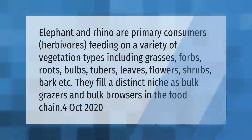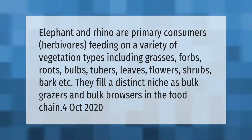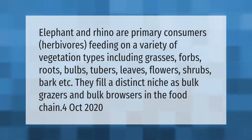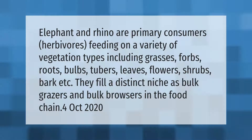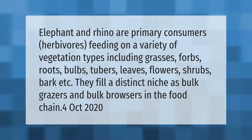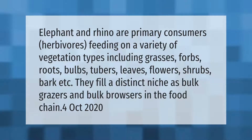Elephants and rhinos are primary consumers — herbivores feeding on a variety of vegetation types including grasses, forbs, roots, bulbs, tubers, leaves, flowers, shrubs, bark, etc. They fill a distinct niche as bulk grazers and bulk browsers in the food chain.